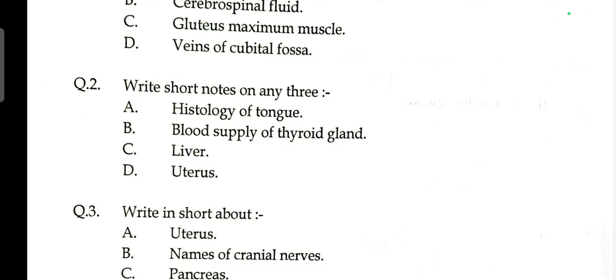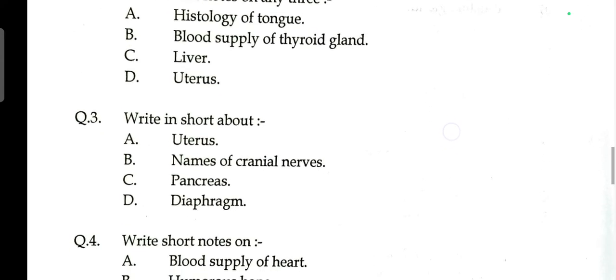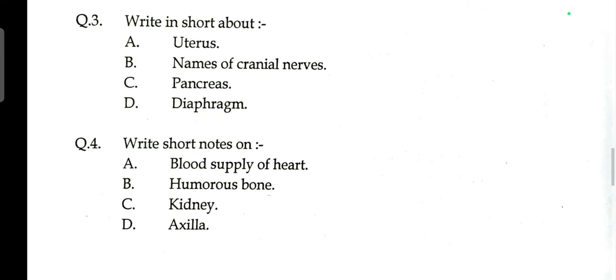Question number two: write short notes on histology of the tongue, blood supply of the thyroid gland, liver, and uterus. If any of these questions come, you should draw a diagram — drawing diagrams will help you get good marks.